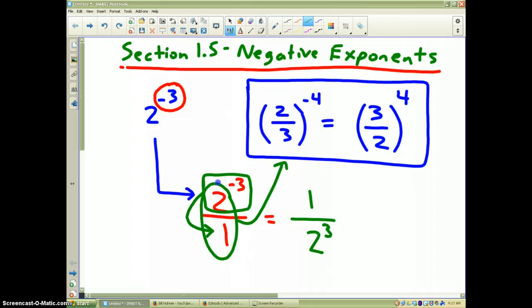Basically, I've taken that fraction, flipped it upside down, and changed the power to positive. So, this would be my final answer, or if they want you to simplify it, 2 to the 3rd power is 8. So, therefore, that would be the final answer.